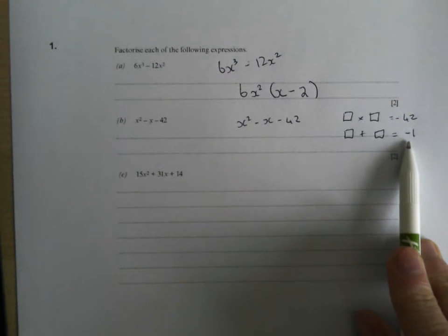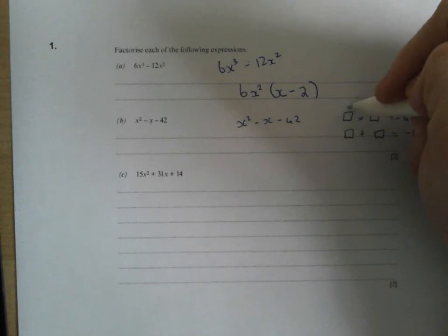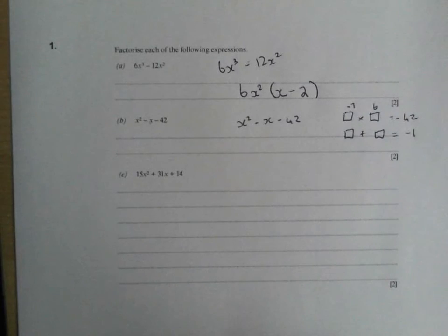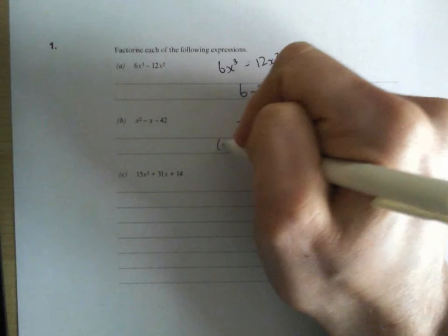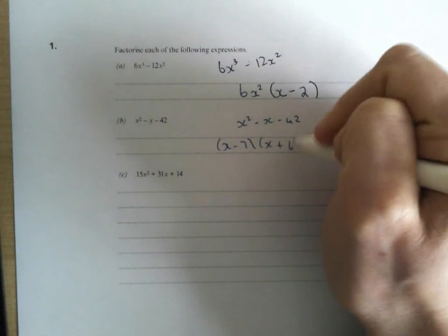Can you see what that is? I reckon minus 7 and positive 6 are going to fit the bill for that one. So I end up with x minus 7, and I get x plus 6.